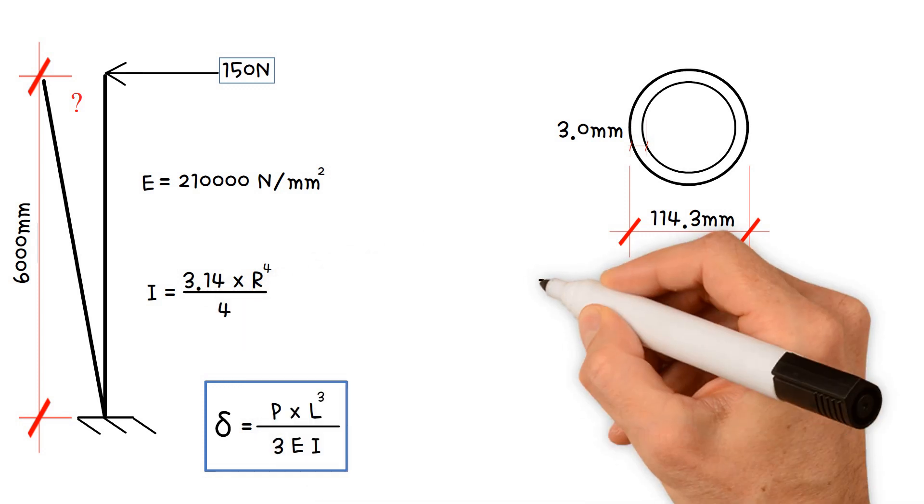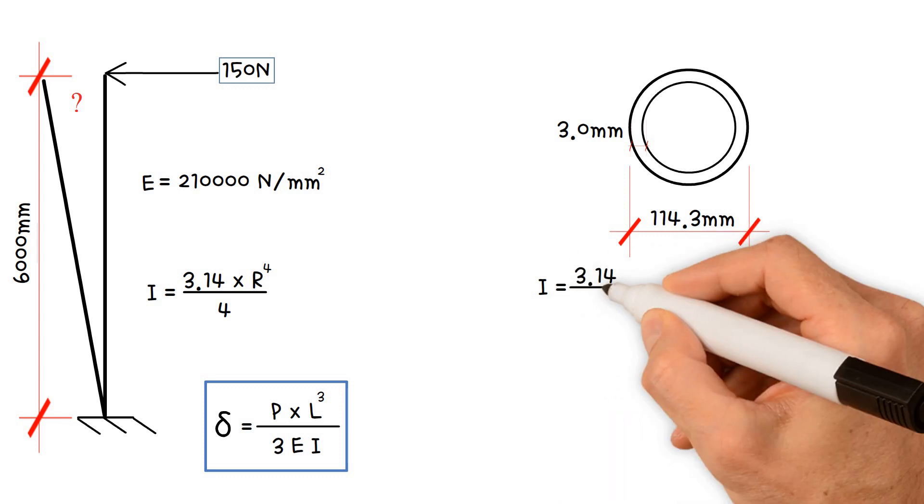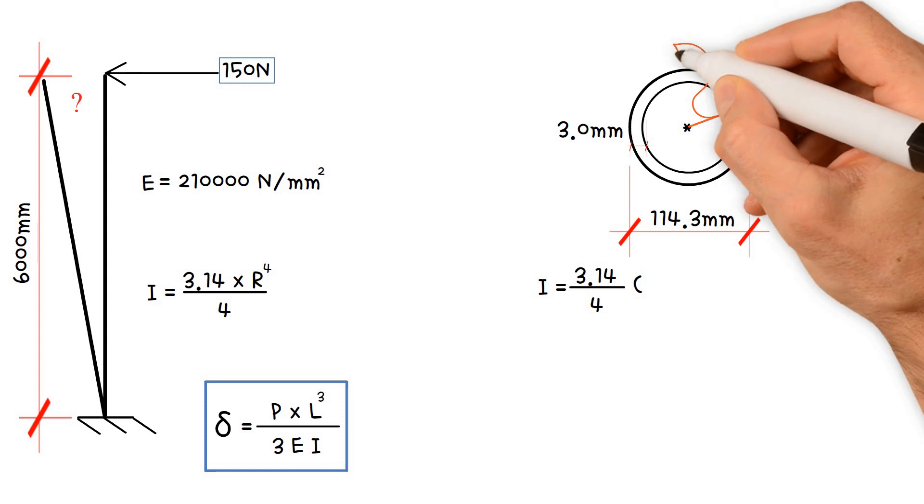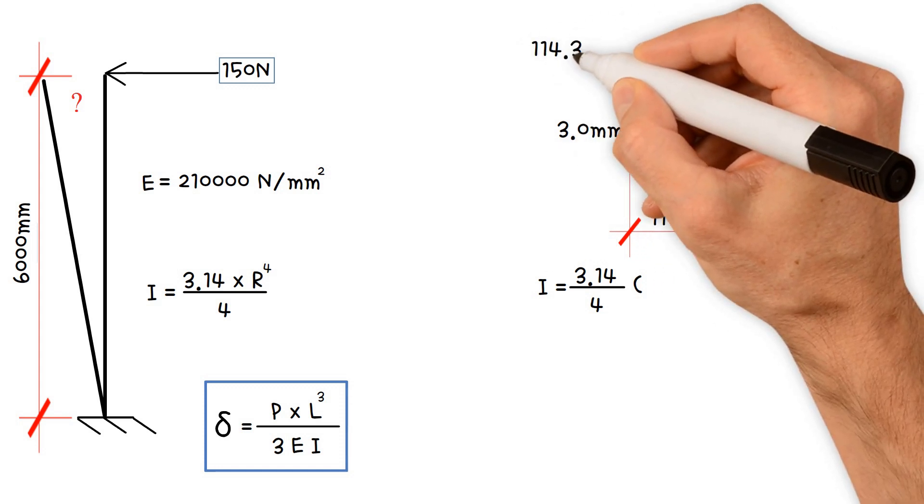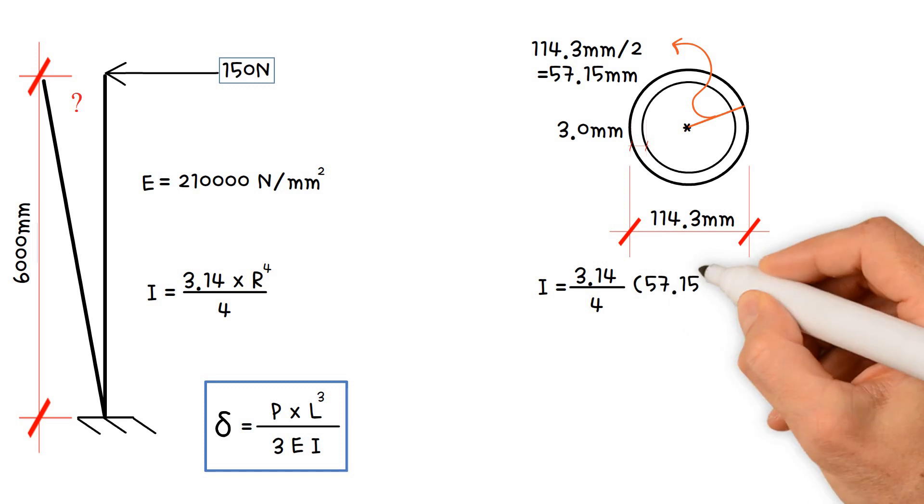The area of inertia of a circular hollow section can be calculated as pi divided by 4 times external radius. Section diameter 114.3 divided by 2, which equals 57.15 millimeters to the 4th.